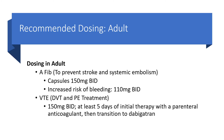Recommended dosing for adults: For AFib to prevent stroke and systemic embolism, the dose is 150 mg twice a day. If there is an increased risk of bleeding, it is 110 mg twice a day. For VTE — both DVT and PE treatment — give at least five days of initial therapy with a parenteral anticoagulant, then transition to dabigatran at 150 mg twice a day.